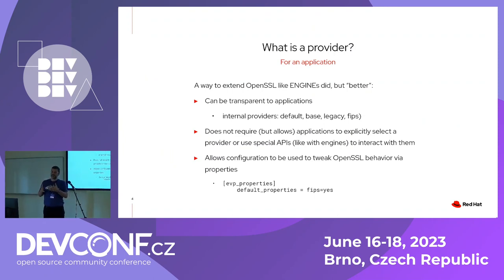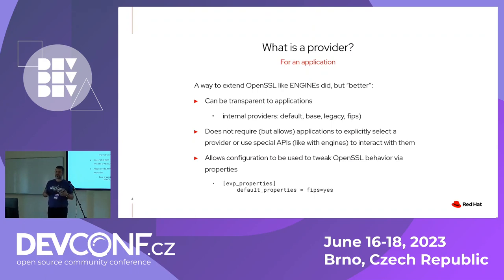OpenSSL had engines but there were limitations. Providers are better engines from an application point of view. They can be transparent to applications, unlike engines where the application had to know how to use them and call specific APIs. There are already multiple providers within OpenSSL 3 that applications don't really see — like the default one, FIPS, legacy, and so on. It's not required for an application to explicitly select a provider; it can be configured in the OpenSSL conf file and loaded transparently.